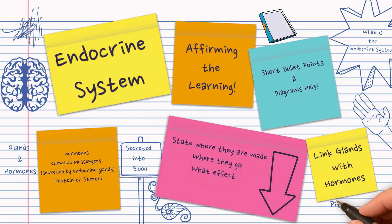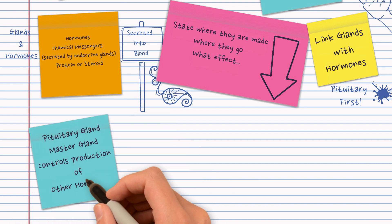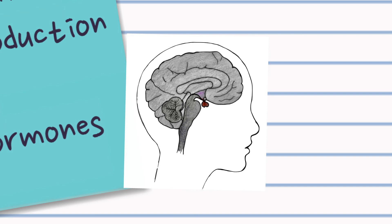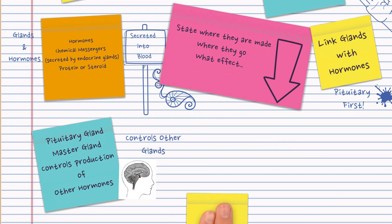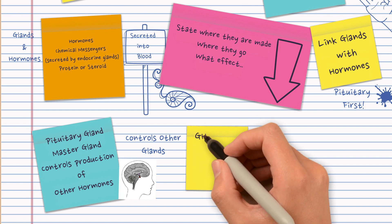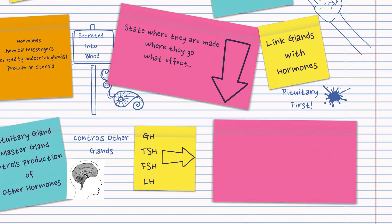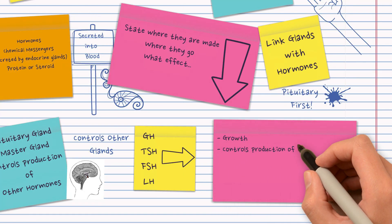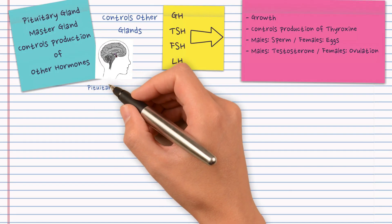Let's start with the pituitary gland, located at the base of the skull. It's sometimes referred to as the master gland because it controls the production of other hormones by other glands. It's made up of two lobes — the front lobe and the back lobe. Key hormones include growth hormone, thyroid stimulating hormone, follicle stimulating hormone, and luteinizing hormone. For every one of these hormones you have to state where it goes and what effect it has.